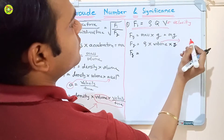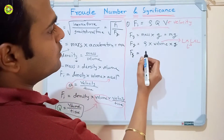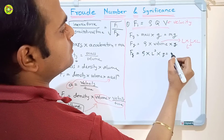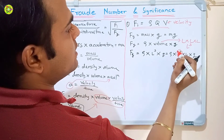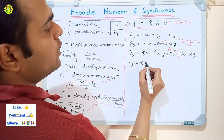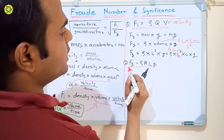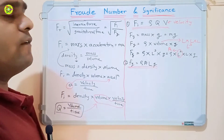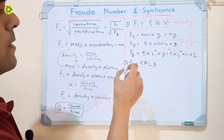We can simplify this: volume equals L cubed (length cubed), so Fg equals rho into L-cubed into g. Rewriting L-cubed as L-squared into L, and replacing L-squared with area A, we get Fg equals rho times A times L times g. This is our second equation.